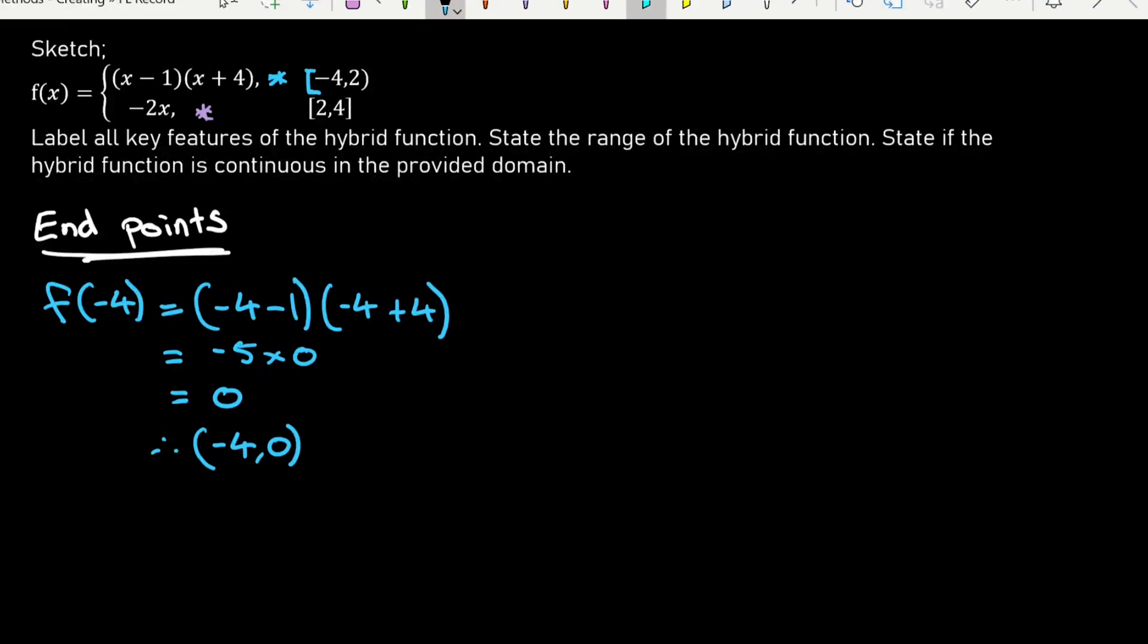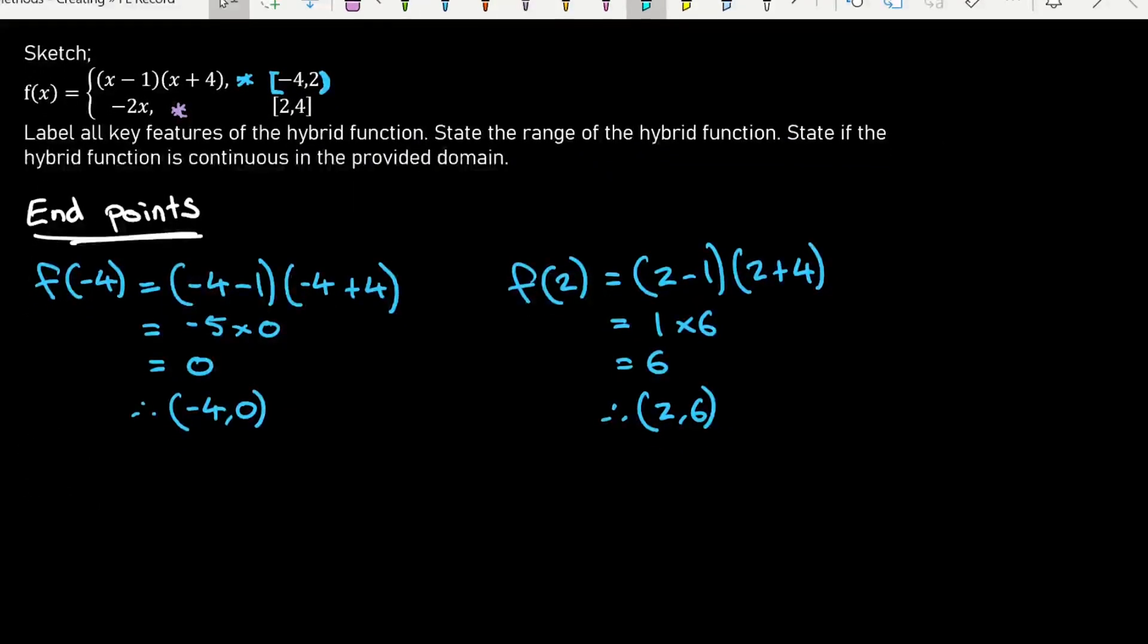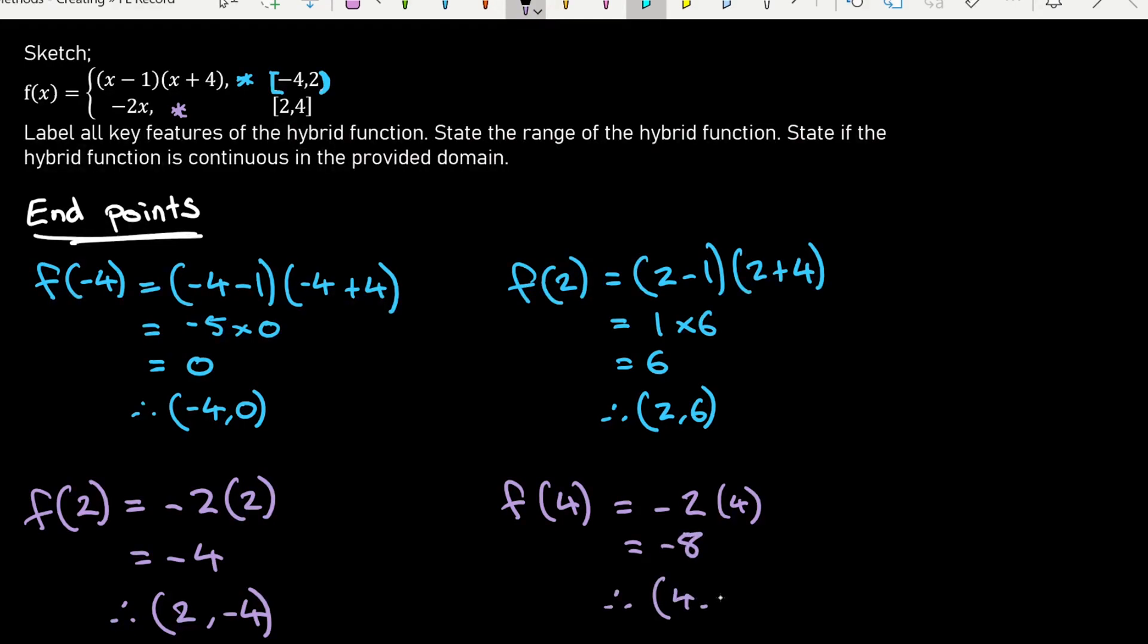And I also want to check my other end point, which is f of two. And so I've got the point when x is 2, y is 6. And I'm going to be excluding that point—that's what that round bracket implies there. So I know where my function is going to start and where it's going to stop. And I'm just going to check the end points of my second function. So there I've got the end points of all of my functions.